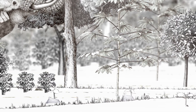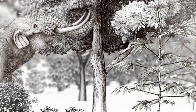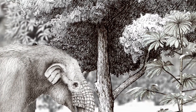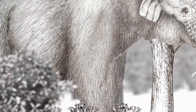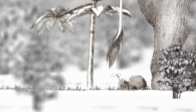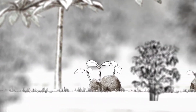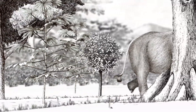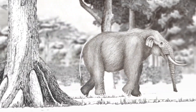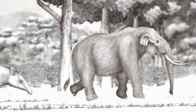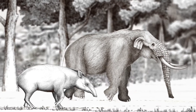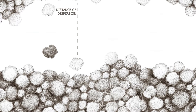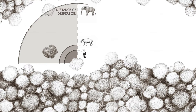Depending on the characteristics of the animal and its foraging behaviour, dispersers will select a variety of fruit sizes and disperse them further away from the mother plant. In this way, each type of disperser fulfils a different function in the process of natural regeneration of plants with fleshy fruit. Some will disperse at small distances, others at medium distances, and others at great distances.